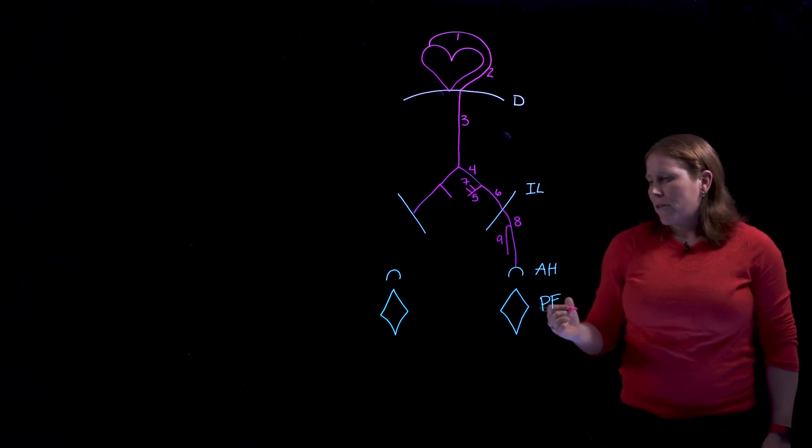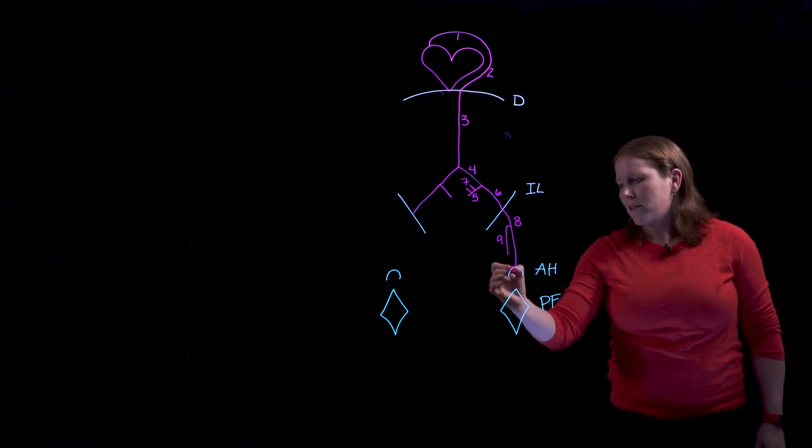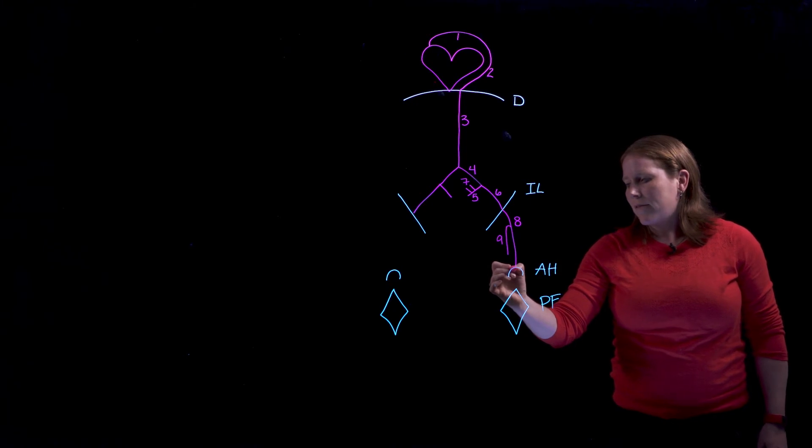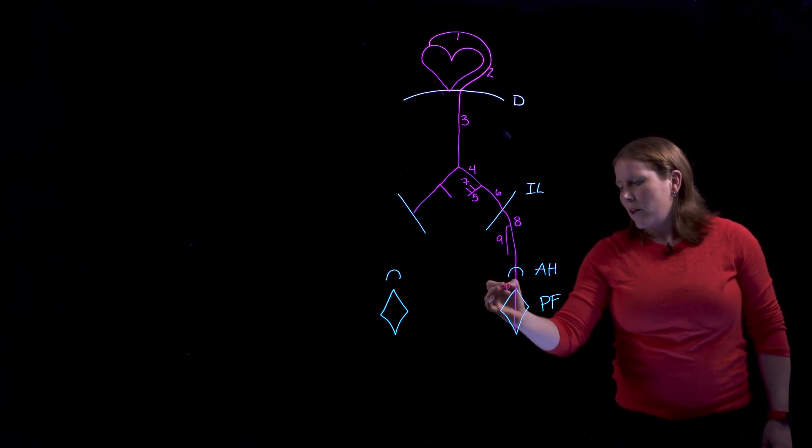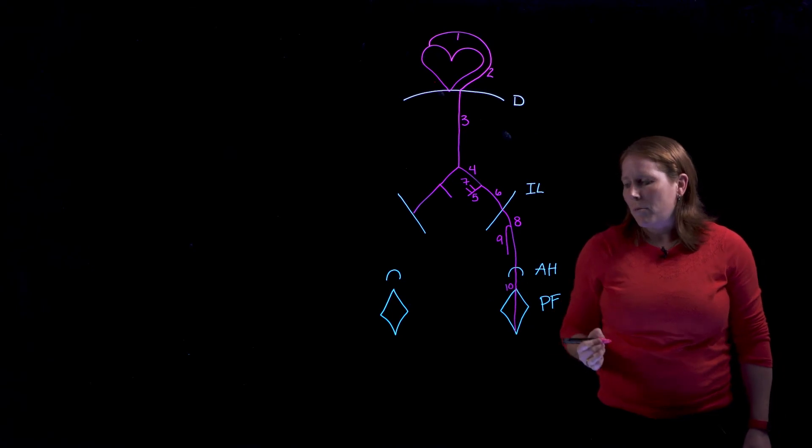As the femoral artery passes through the thigh eventually it's going to pass through this adductor hiatus and that takes it from the anterior thigh into the posterior thigh. And once you end up here in the posterior thigh and popliteal fossa this artery gets renamed the popliteal artery.